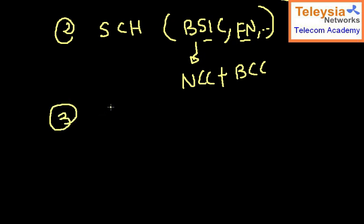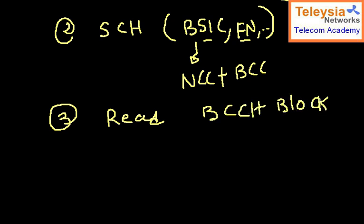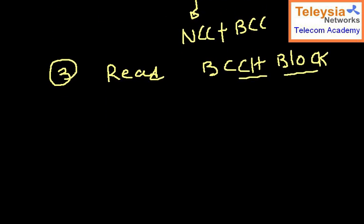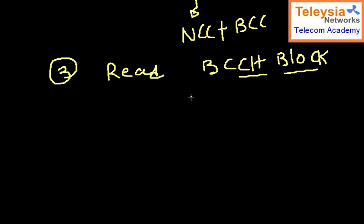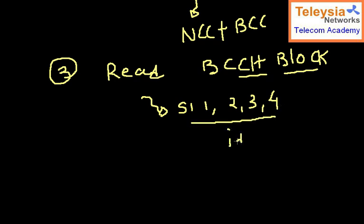After getting the frequency and synchronization, the third step is to read the BCCH block. This block radiates different System Information messages over the air interface — System Information 1, 2, 3, and 4. All of this system information is radiated in idle mode. When you are in idle mode, you listen to these system information messages being broadcast over the BCCH block.